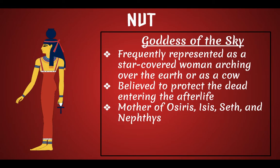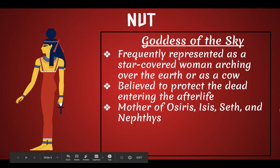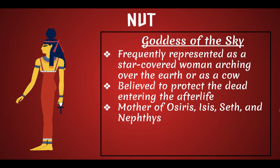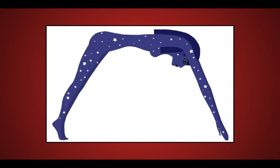Nut is the goddess of the sky. She's frequently represented as a star-covered woman arching over the earth, or as a cow. She's arching over the earth as the sky. She's believed to protect the dead who are entering the afterlife. She is the mother of Osiris, Isis, Seth, and Nephthys — those four siblings.